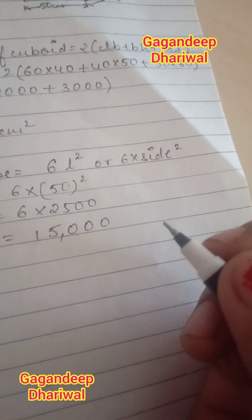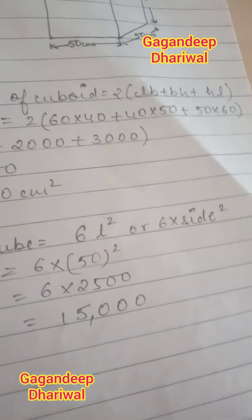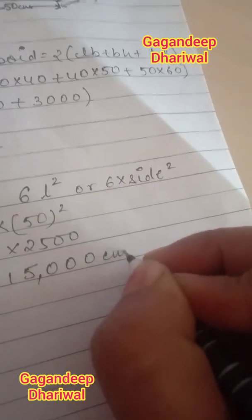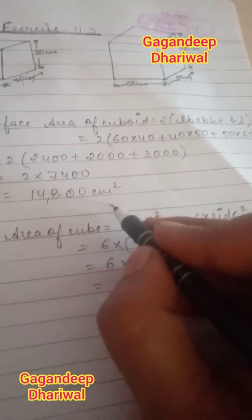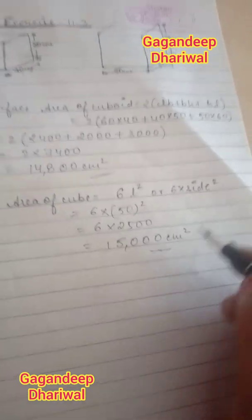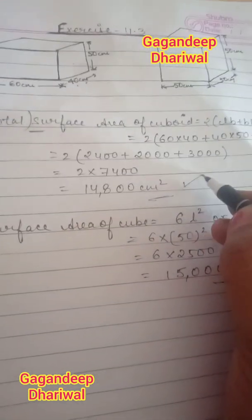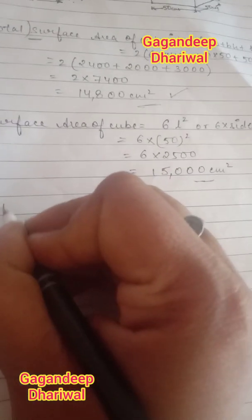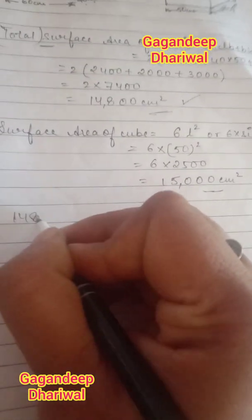Now let us compare the two surface areas. The cuboid has the lesser surface area at 14,800 cm² compared to the cube's 15,000 cm². This means the cuboid box requires the lesser amount of material to make. So the answer is the cuboid.